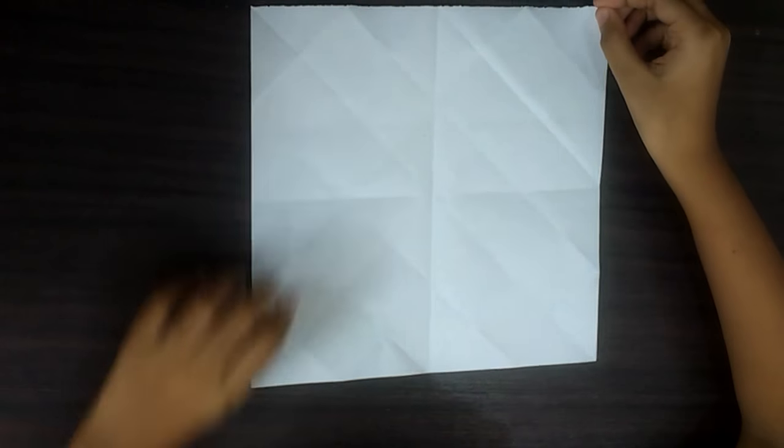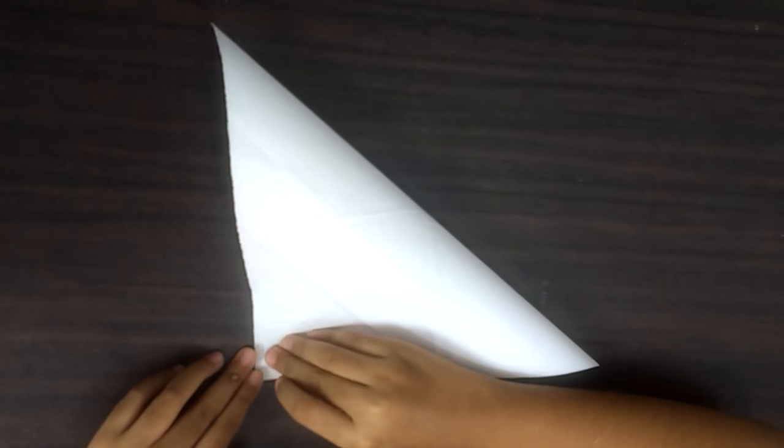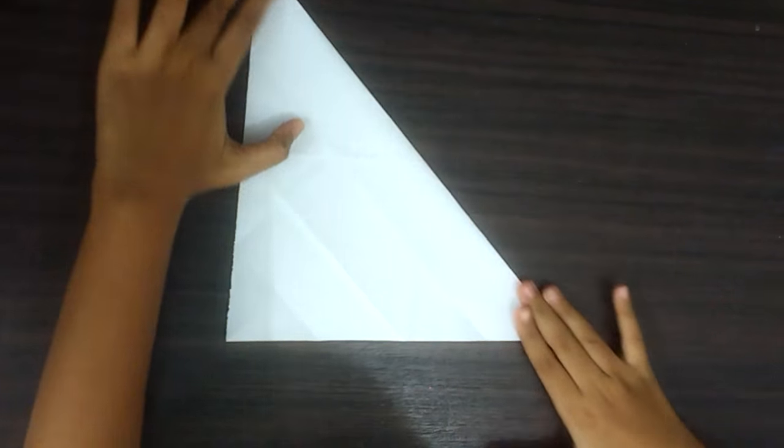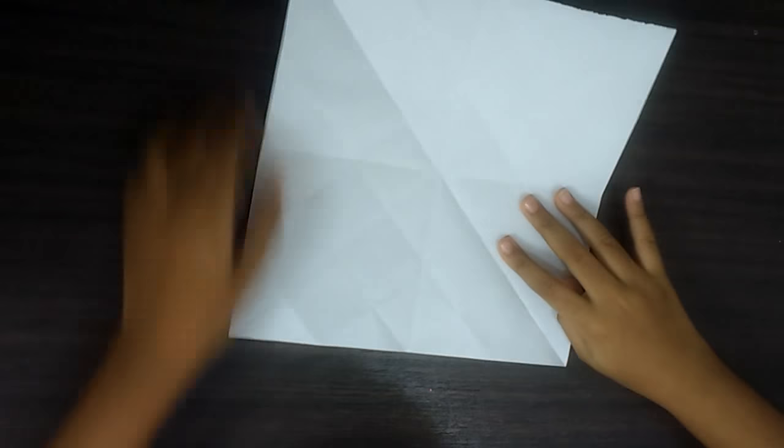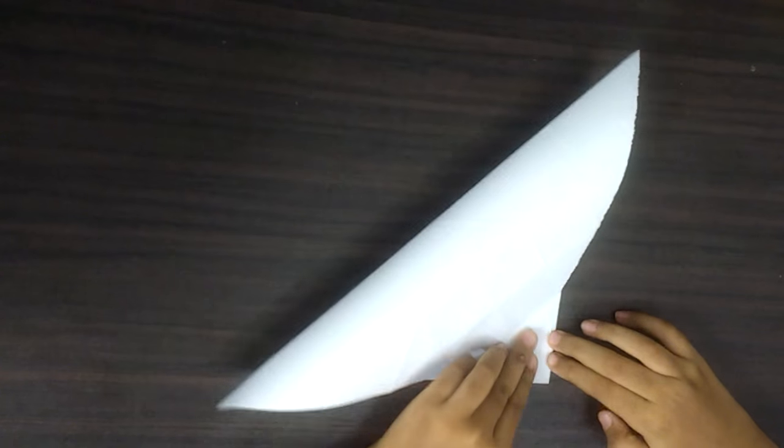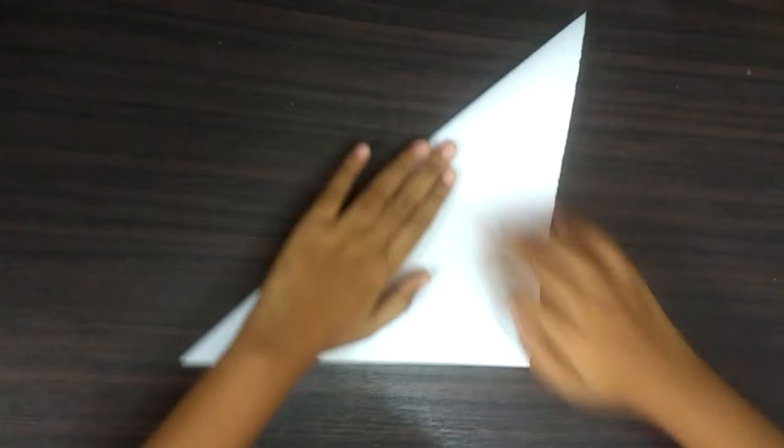Now, fold one corner and fold it to the other corner to make a triangle. Fold another corner and fold it to the other corner. We will get another triangle.